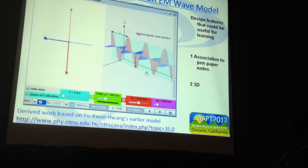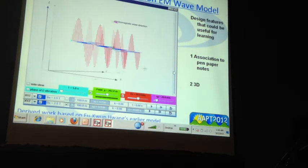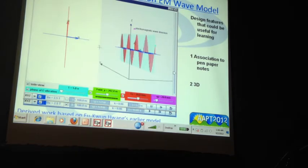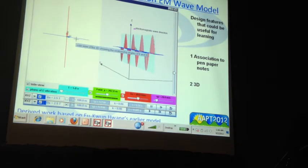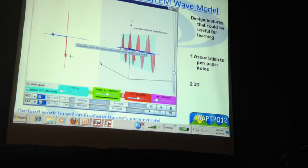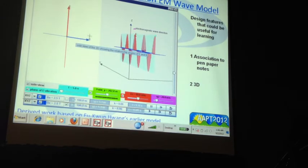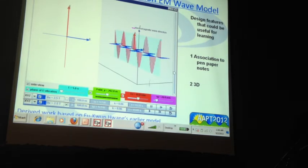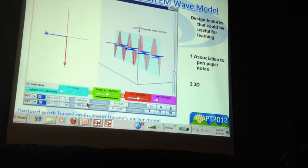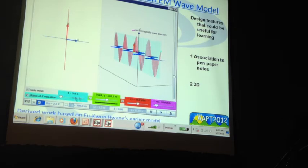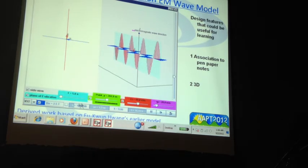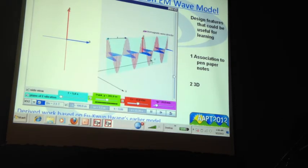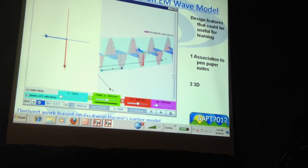This one is on EM WAVE. So this is to show the linear polarization of the E field and the B field. So this is a simple 2D view, and this is a 3D view. And I decided that, you know, this doesn't really help the student very much, so I added certain stuff, like the wavelength, so that they know, oh, this is a wavelength corresponding to a 3D plane.